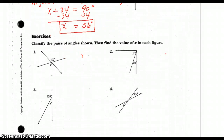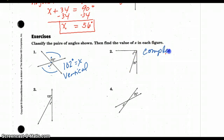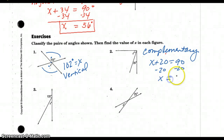Next, classify the angles by their relationship. These are vertical angles — remember how two lines make angles that come together and make a little point? So 102 degrees equals x. For the next pair, we have complementary angles again: x plus 20 equals 90. Subtract 20, and x equals 70 degrees.